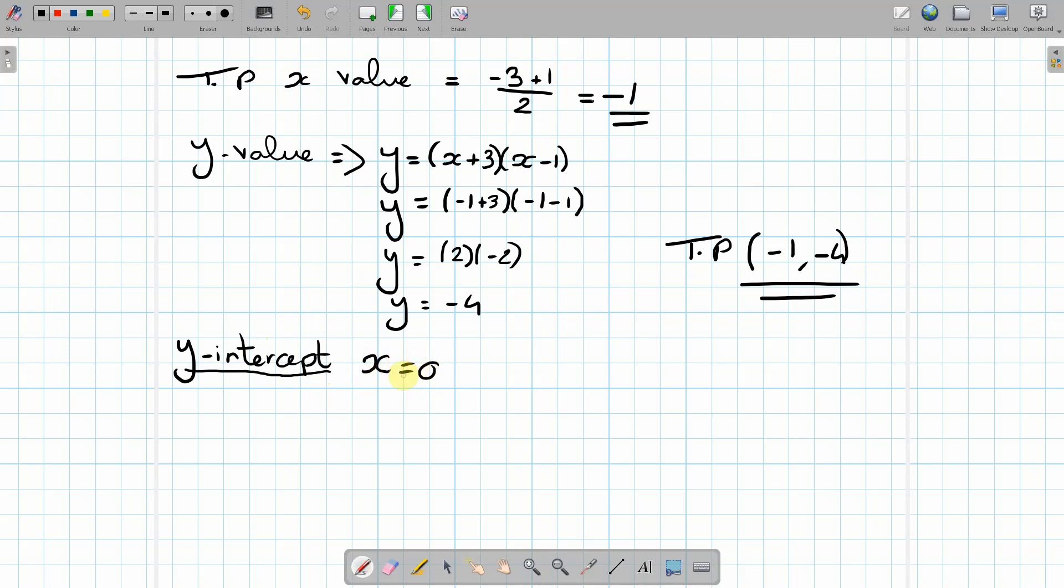So y equals, and if we substitute in 0 in here, we'll get (0 plus 3)(0 minus 1). So y equals minus 3. So the coordinates of this is (0, minus 3).